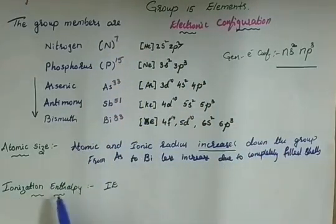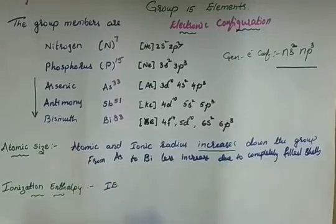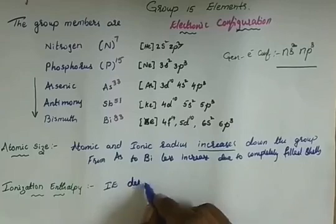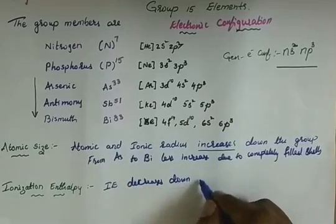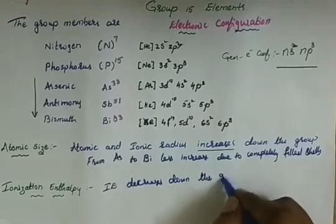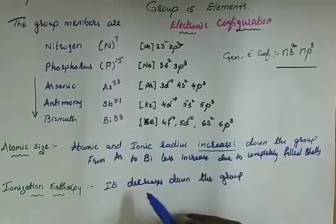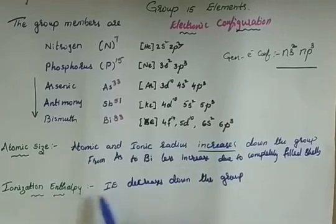Coming to the ionization enthalpy: it is the reverse of atomic size. As atomic size increases down the group, ionization enthalpy decreases down the group. This is because as the size is larger, there is less attraction towards the nucleus, so it is easier to remove the electron and less energy is required — that is, lower ionization enthalpy.